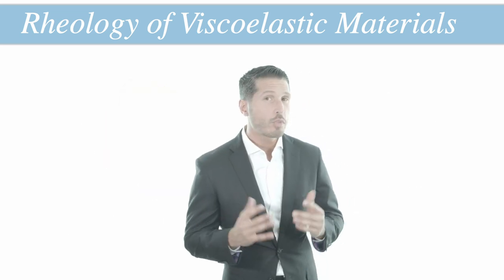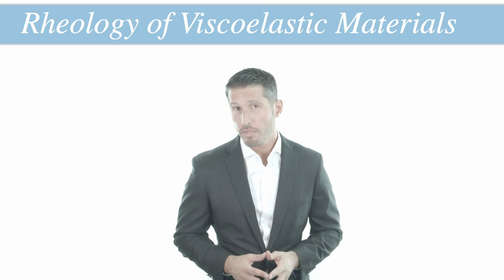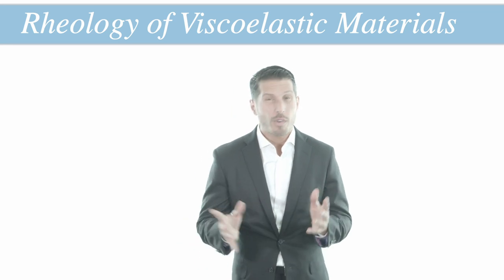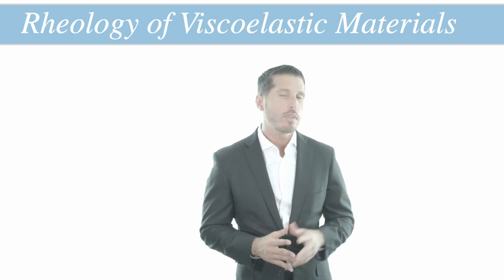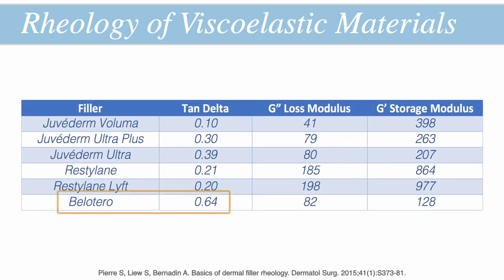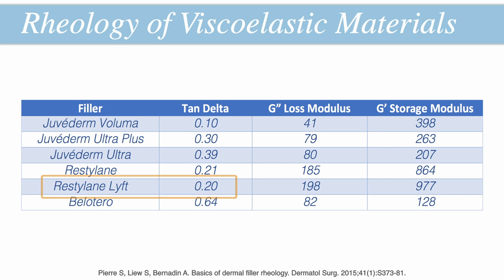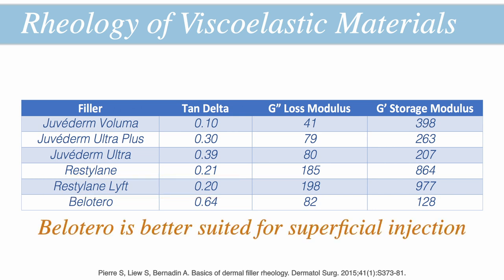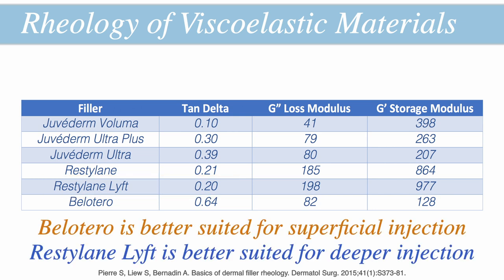The cohesivity of a gel appears to be important in the biointegration of fillers, allowing materials to smoothly adapt to the nooks and crannies of biological tissues. Very soft fillers like Belotero, due to low G prime, high G double-prime, and high tan delta values, are highly cohesive compared to more rigid fillers like Restylane Lift. Belotero is thus better suited for superficial injection, while Restylane Lift is better suited for deeper injection.